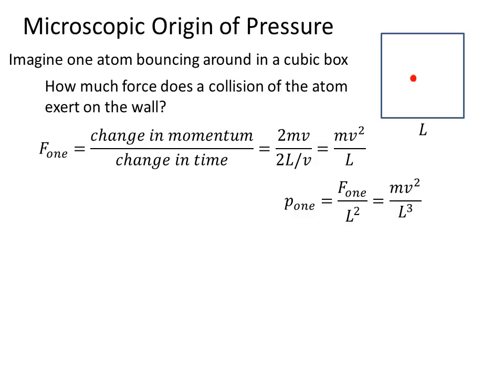So the pressure of one atom is M times V squared divided by L cubed. But L cubed is the volume of the box. So it's just MV squared divided by the volume.